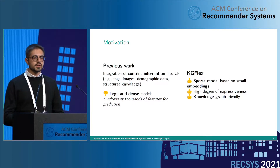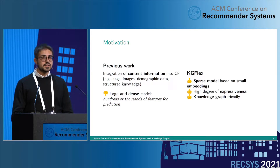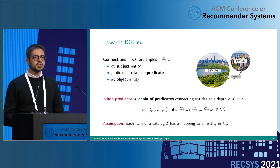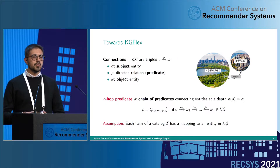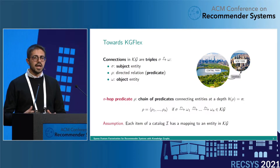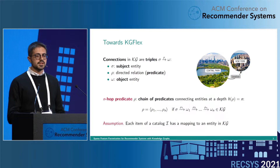Here we propose KG Flex, which is a new sparse model based on small embeddings with a higher degree of expressiveness, and that has been studied on information coming from knowledge graphs, which are usually a very rich source of structured information. In knowledge graphs, we have entities connected by means of some directed relations that we call predicates. We define an N-hop predicate as a chain of N predicates connecting a starting entity with a final entity, and we assume that each item in the catalog of our recommender system has a mapping to an entity in the knowledge graph.